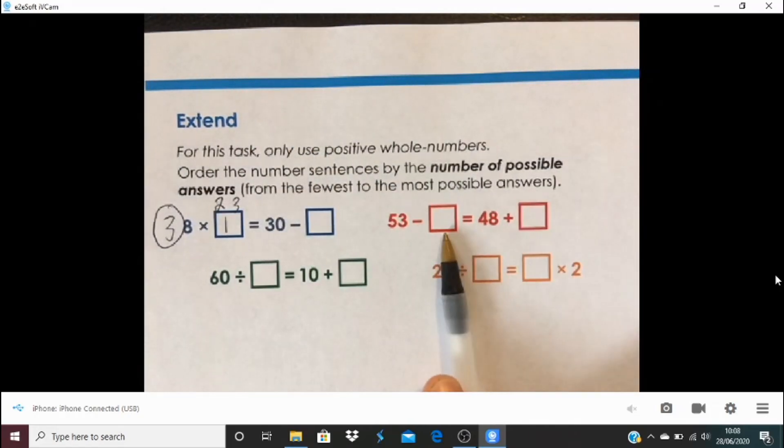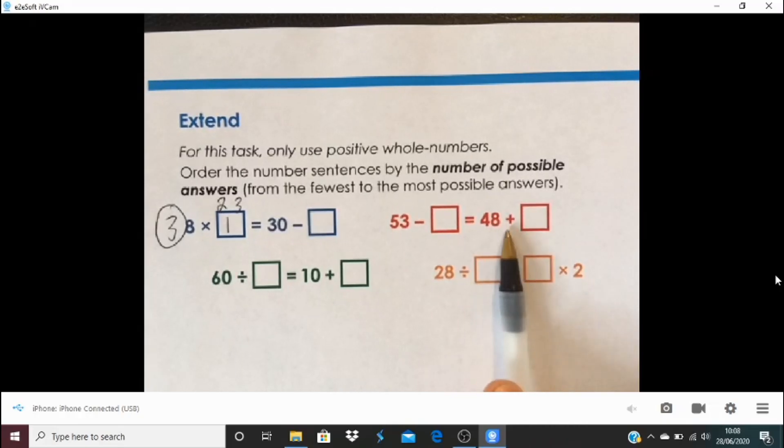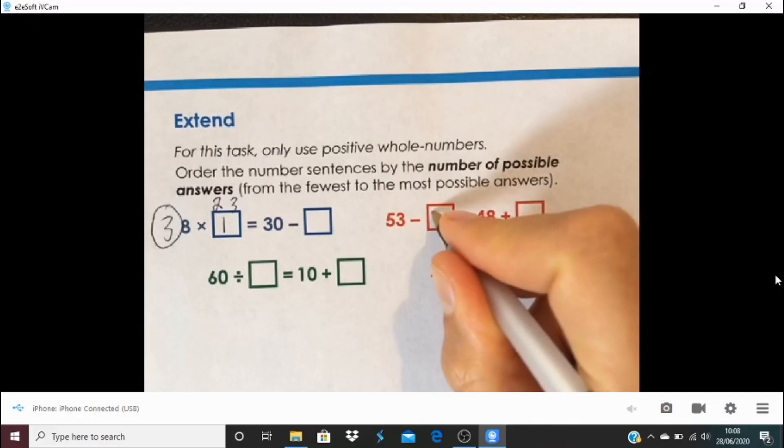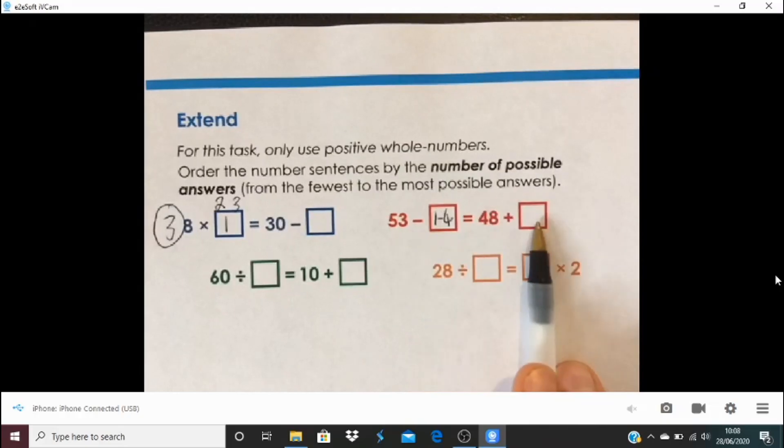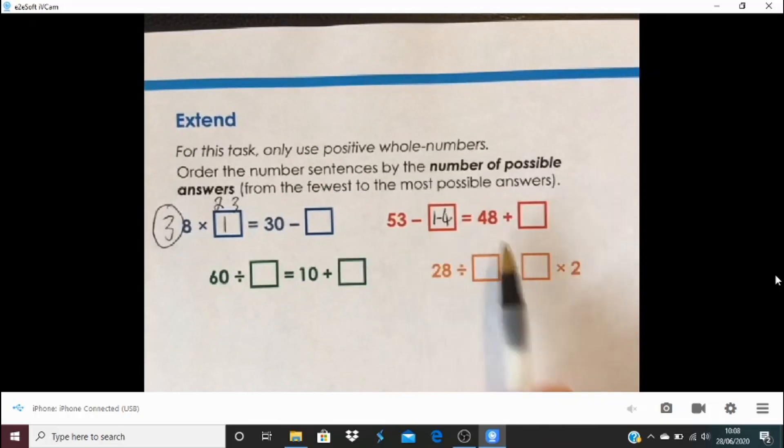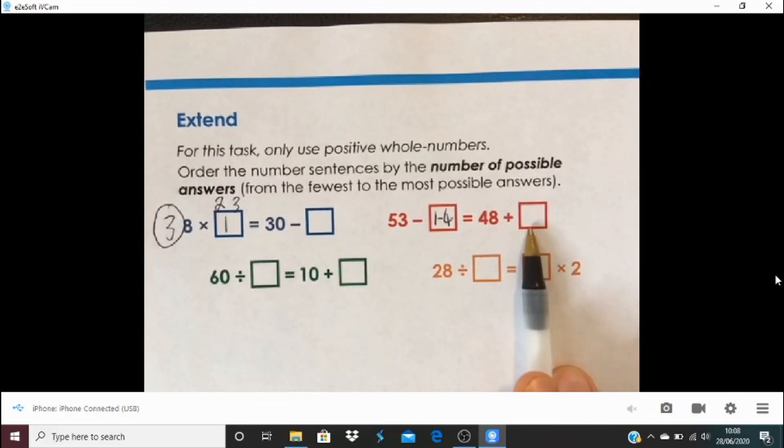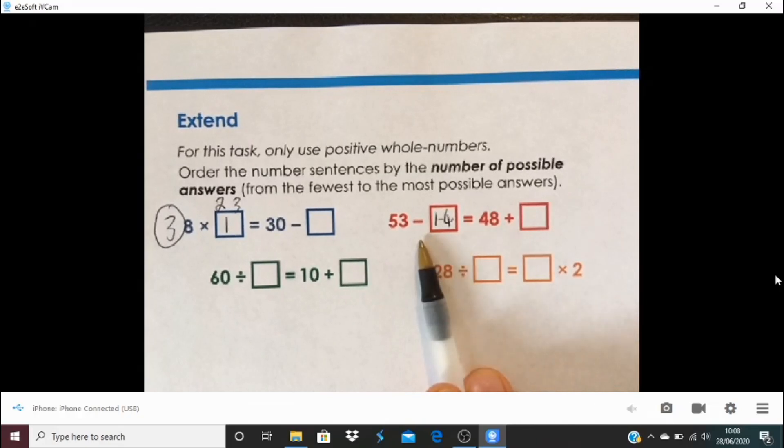Now, let's go here. In 53 subtract something equals 48 plus something. So I would have to think, how many ways can I subtract from the 53 to end up with this side will have to be at least 49. So I could subtract there anything between 1 and 4. Because if I subtracted 1, then I would add, that would get me to 52 here. I could add 4 here. If I subtracted 4, that would get me to 49, and then I'd just add 1. And so that's the range that we're working in here. Four possible answers.